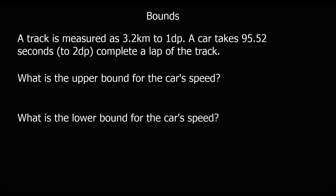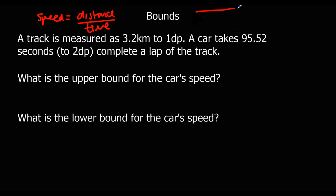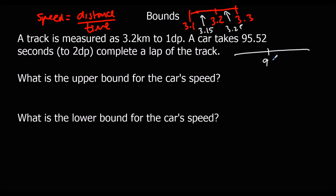Now try this one: work out the upper and lower bounds for the track and for the time, then calculate the speed using speed = distance ÷ time. The track is 3.2 kilometers. The next one down is 3.1 and the next one up is 3.3, so the lower bound is 3.15 and the upper bound is 3.25. The time is 95.52 seconds to two decimal places.